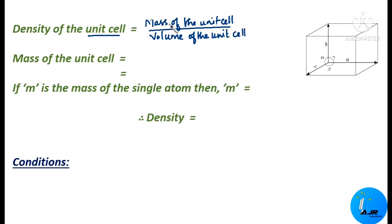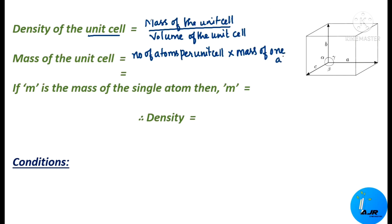Next we are going to find out the mass of the unit cell. The mass of the unit cell can be calculated by the formula: number of atoms per unit cell into mass of one atom. So this is the formula used to determine the mass of the unit cell. If you know the number of atoms present in this particular unit cell and multiply it with the mass of one atom, you will get the mass of the unit cell.